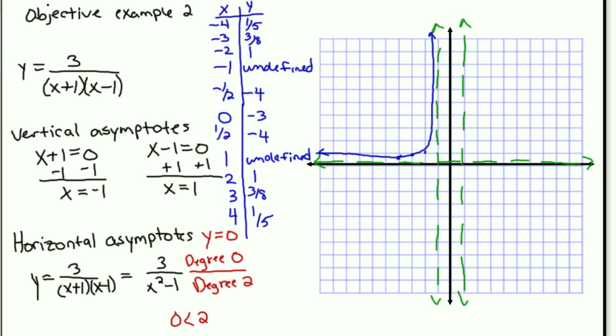Negative 1 half, negative 4. Zero, negative 3. 1 half, negative 4. So we're going to have a mini parabola on the inside.